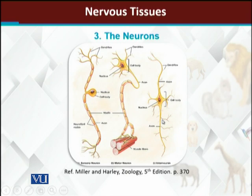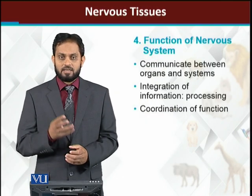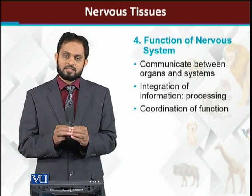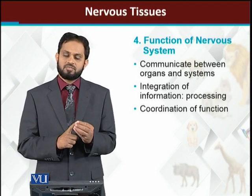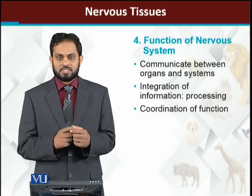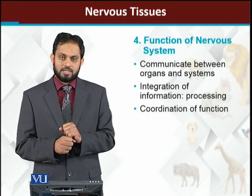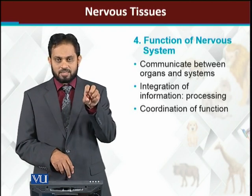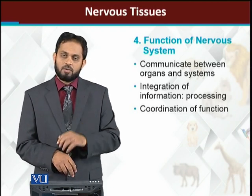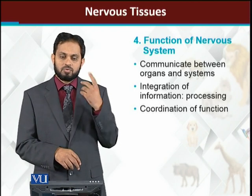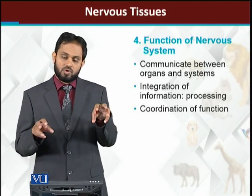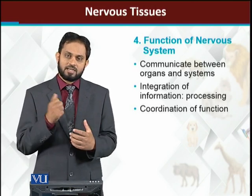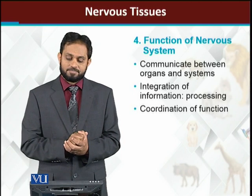The function of neurons and the nervous system: the nervous system's functions can be divided into two or three steps. First is communication between different organs — for example, if we have to pick up something, we move using our legs, pick it up with our hands, and our eyes observe it. Now there is coordination between the eyes, hands, and feet — all working together — and it is the nervous system that provides this coordination.